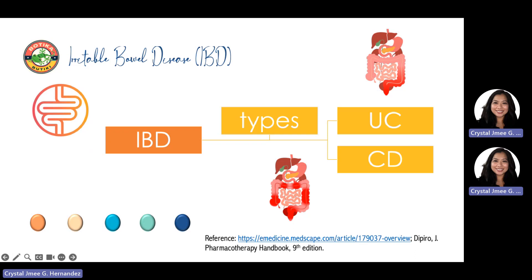On the other hand, Crohn's disease or CD results in transmural ulceration of any portion of the gastrointestinal tract, most often affecting the terminal ileum and colon. Due to the segmented parts affected, CD is characterized as having skip lesions. Both diseases are classified by extent — mild, moderate, or severe — and location. CD is also classified by phenotype: inflammatory, stricturing, or penetrating. Besides the GI tract, both Crohn's disease and ulcerative colitis have many extra-intestinal manifestations.